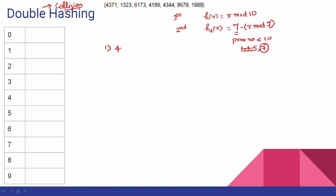So collision will not be done initially — we will use a collision mode. First: 4371 mod 10. The value is 1. Straight away the normal first hash function gives us location 1. Next: 1323 mod 10 — this value is 3.